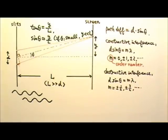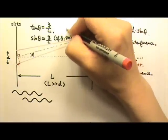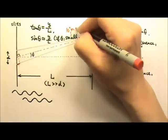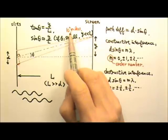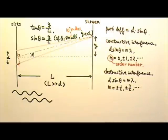And when I say small angle, I mean probably about 10 degrees or less. The smaller the angle, the better the approximation. The bigger the angle, the worse the approximation.